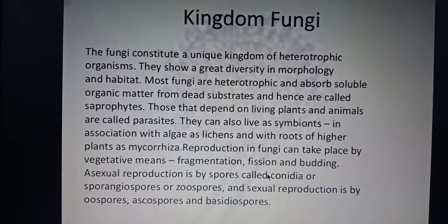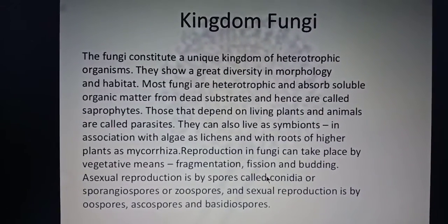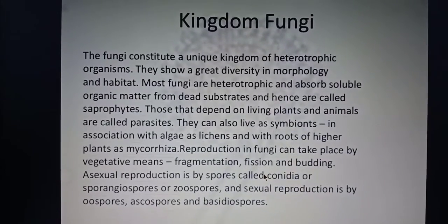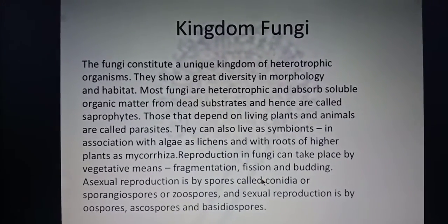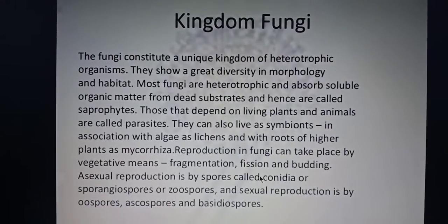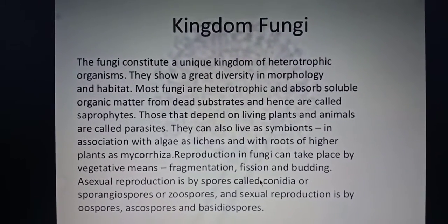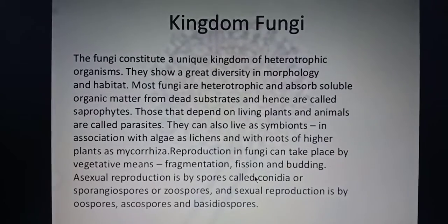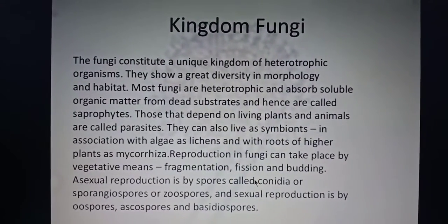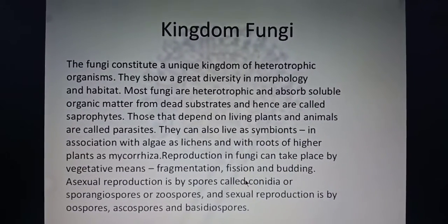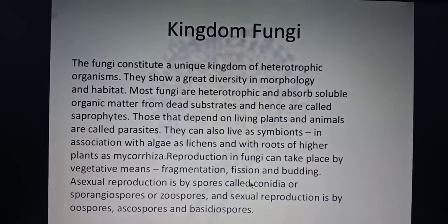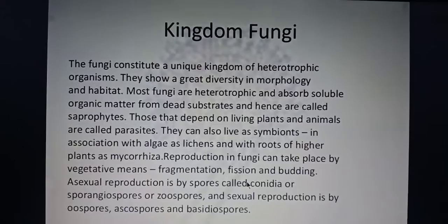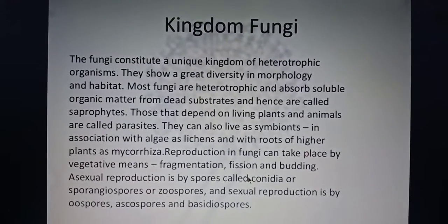Reproduction in fungi can occur by vegetative means — that is, by fragmentation, fission, or budding. In fragmentation, one part of the filament breaks and grows into a new mycelium. Fission takes place in yeast, a unicellular organism, similar to fission in amoeba. Budding occurs when a side bud grows, falls off, and develops into new hyphae.